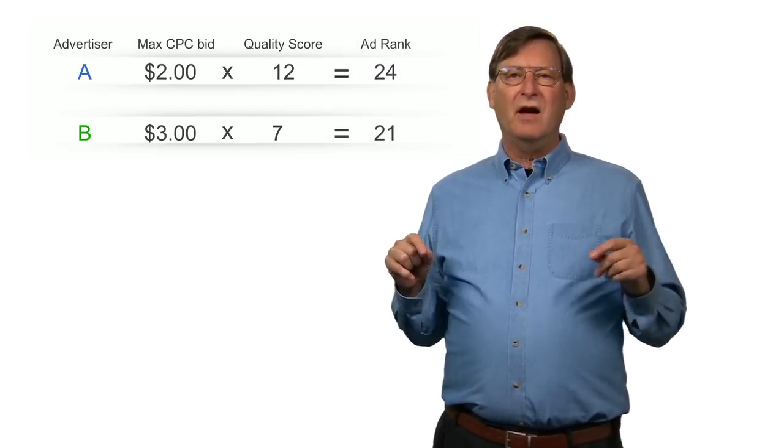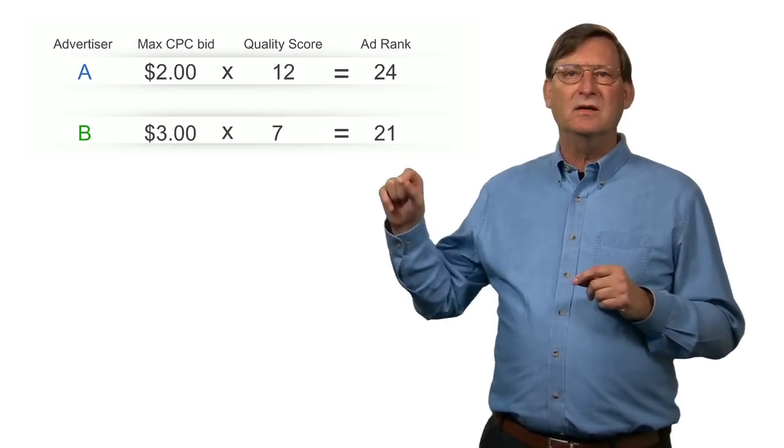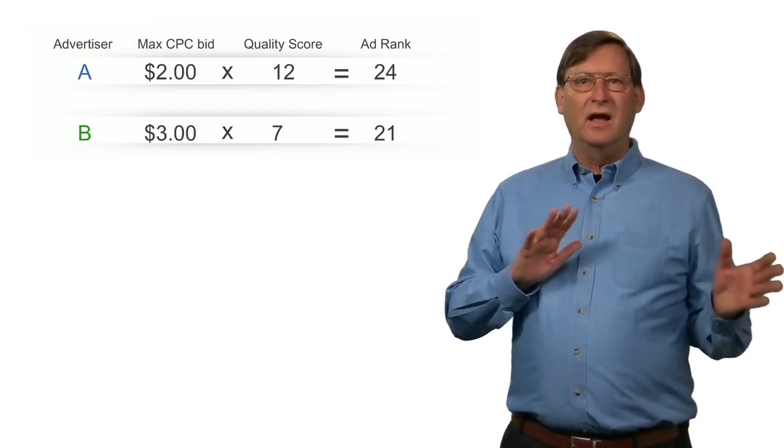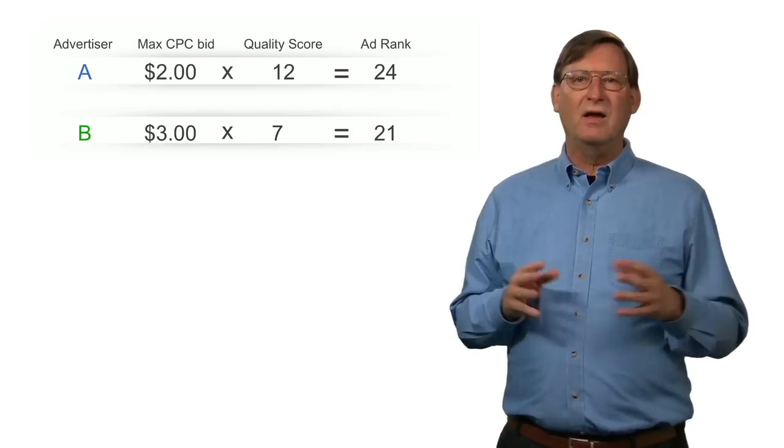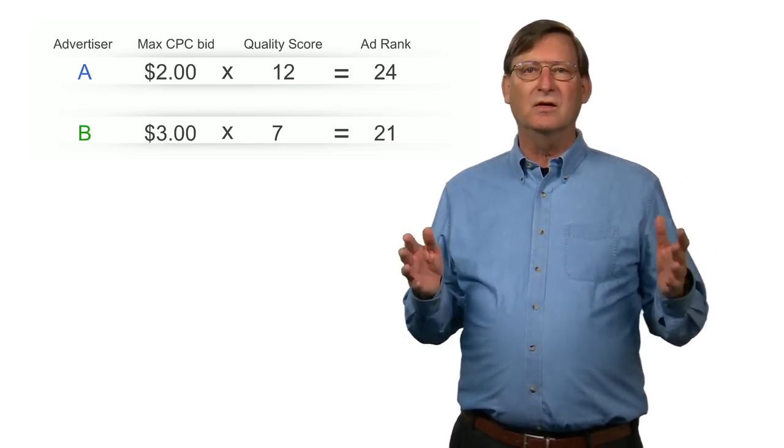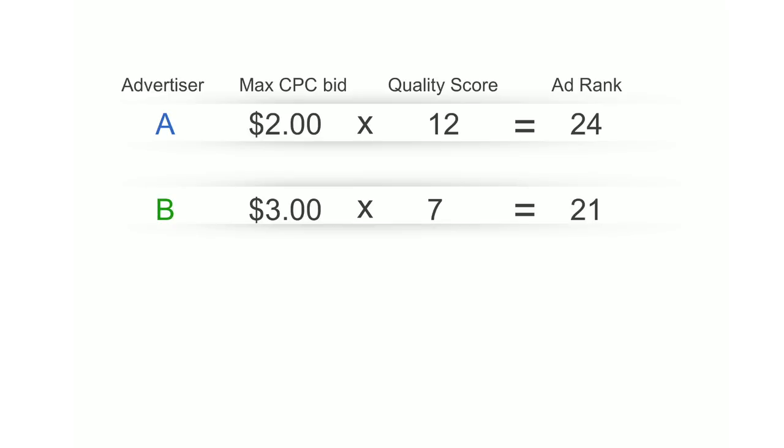But to determine the price that advertiser A will pay, we take the next highest ad rank, that's advertiser B's ad rank, and divide through by the quality score of advertiser A, then round up to the nearest minimal currency unit in the advertiser's country. So here, we'll assume the advertisers are located in the U.S., so we'll just add a cent. So as a result, if a user clicks on advertiser A's ad, he'll pay $1.76. This amount is then divided between the publisher and Google.